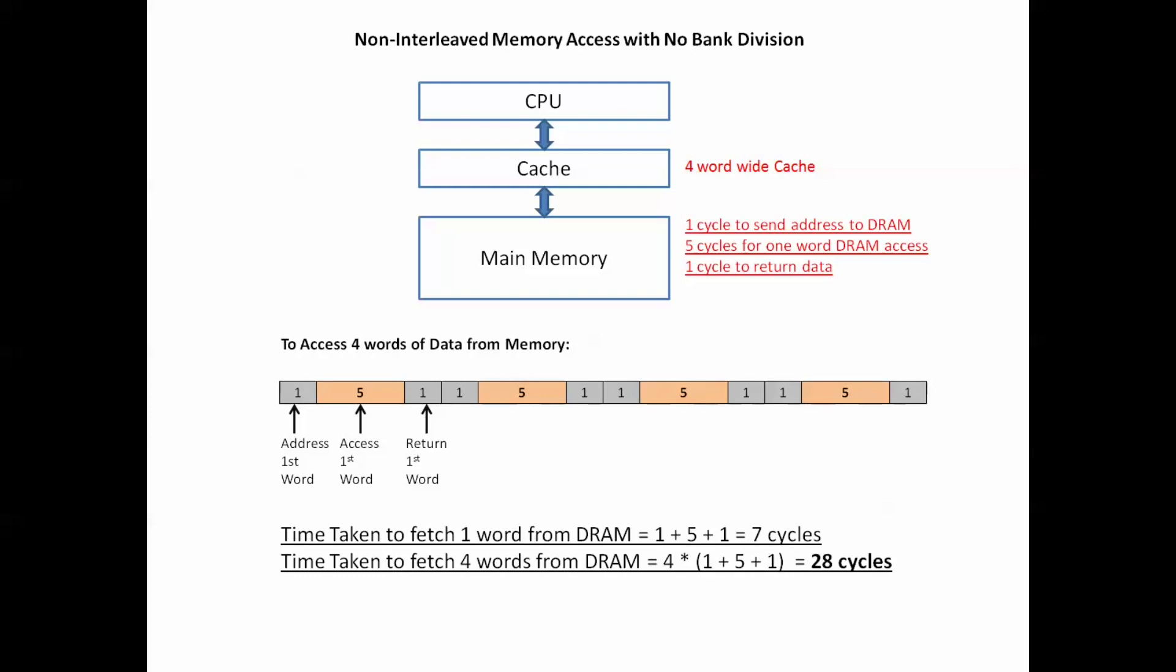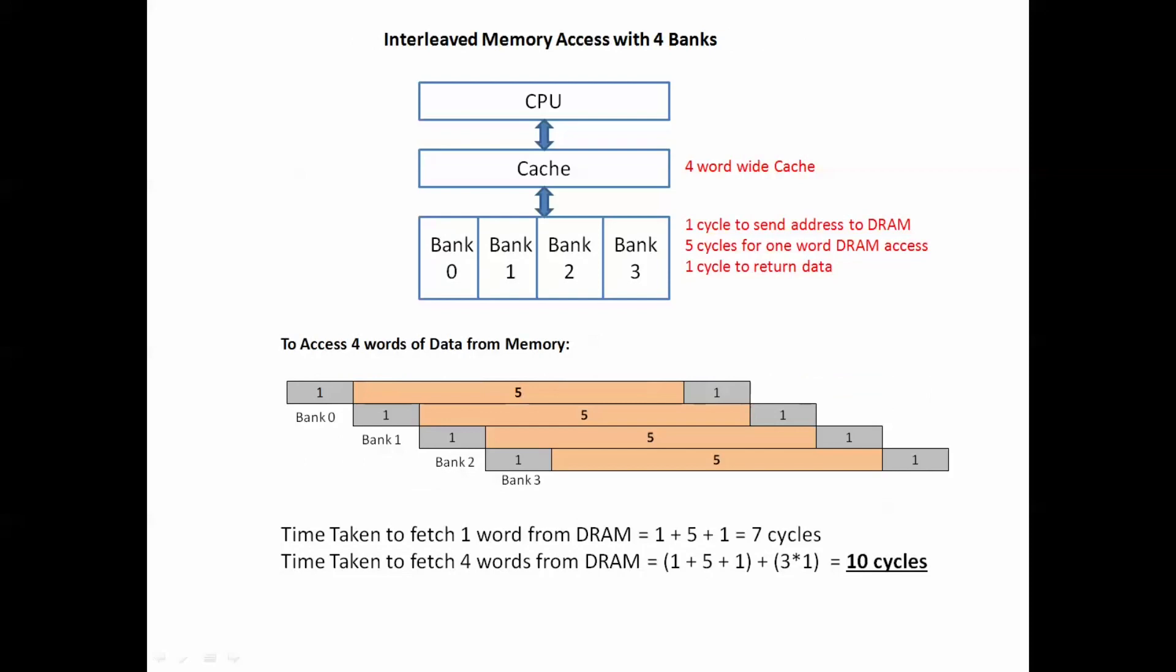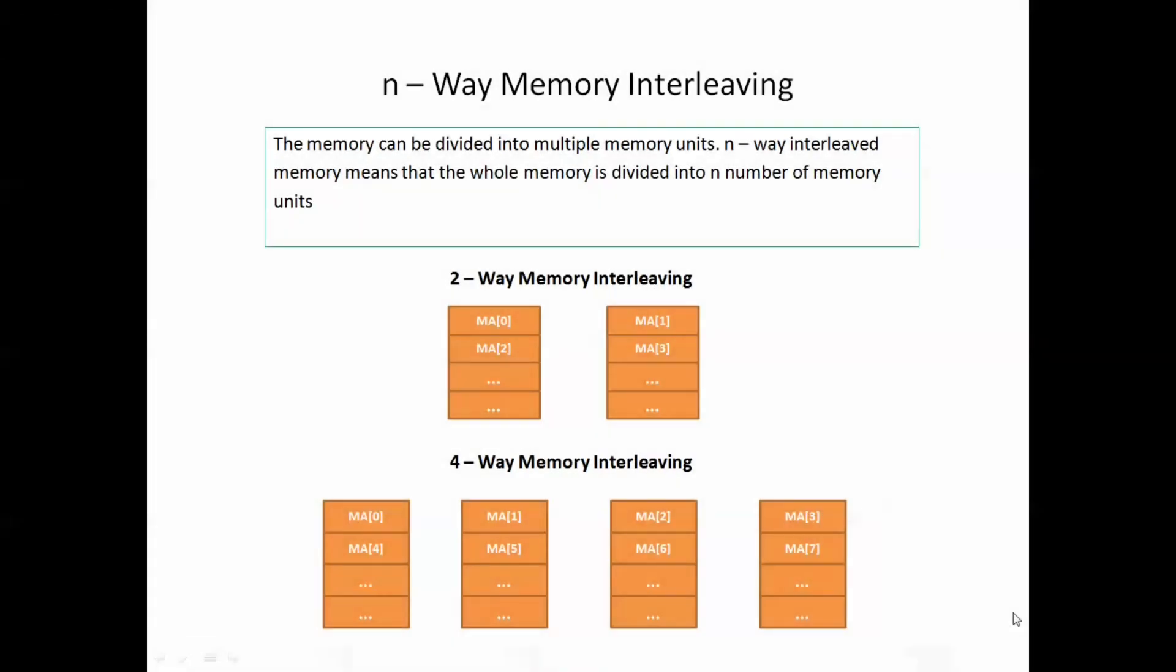However, the same four-word fetch in an interleaved memory access would take only 10 clock cycles. This shows that the access time is reduced considerably in an interleaved access. Now, the next concept to understand is n-way interleaving.